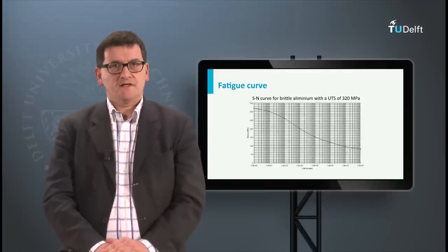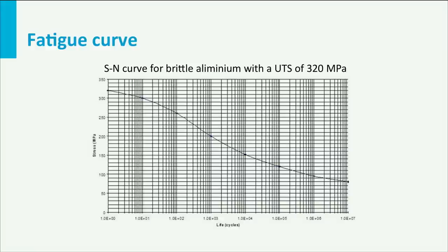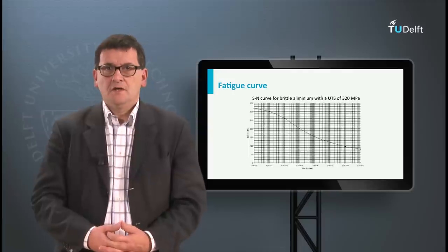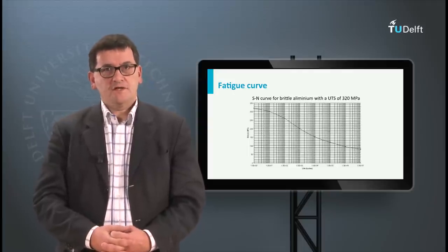In this graph we see a so-called SN curve of an aluminium alloy. The horizontal axis shows the number of cycles logarithmically, and the vertical axis shows the failure stress. At cycle 1, a static test, the material fails at 320 MPa. At 100 cycles the failure stress is 260 MPa, at 1,000 cycles it is 200 MPa, and at 10,000 cycles it is 160 MPa. Further increase in number of cycles results in lower failure stresses, the same as we experience with the paperclip experiment — more repetitive loads reduce the maximum applicable loads.